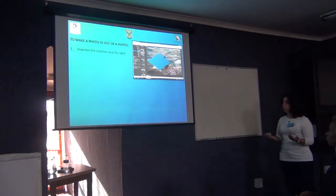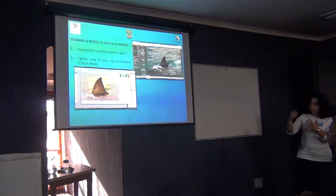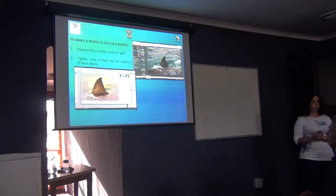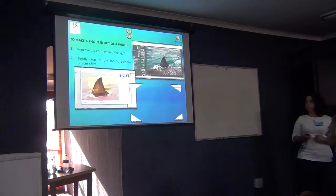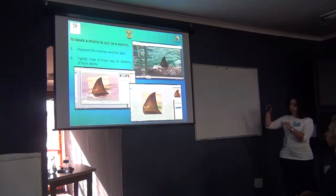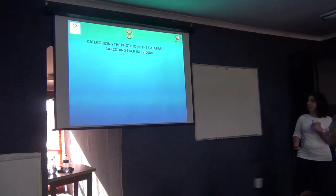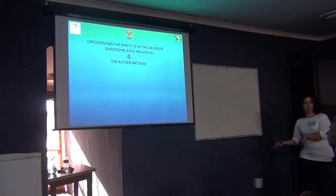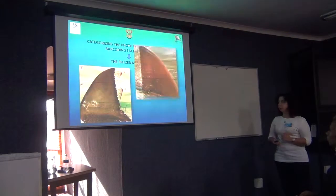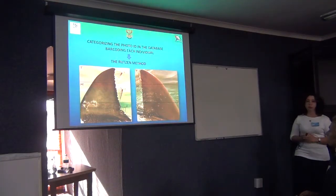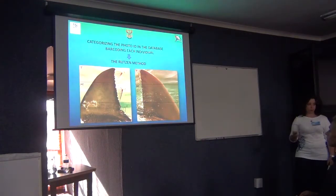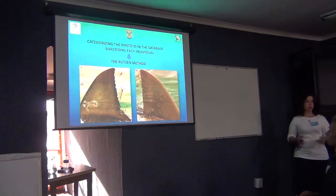The first step is to take a decent photo, then improve the light with some Photoshop work to make a nice photo ID, and crop it tightly from the bottom to the top of the dorsal fin. Doing that, we can barcode the fins. Using a method suggested by Mike Rosson, we divide the fin into three parts and count the notches in each part of the dorsal fin, so each unique shark gets a numerical barcode code that can be identified over time.